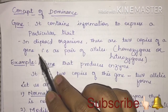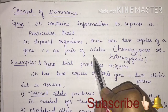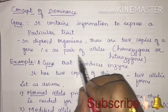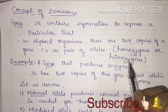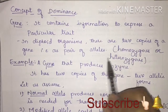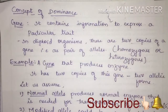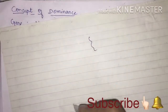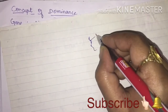We have haploid organisms and diploid organisms. In diploid organisms, there are two copies of a gene — that is a pair of alleles, as we have discussed in our previous video. Diploid organisms contain two copies of a gene which are called a pair of alleles. These pair of alleles might be homozygous or heterozygous, meaning they might be similar or dissimilar.